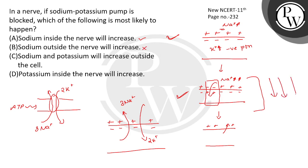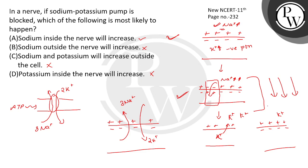What did we see? Sodium is moving from outside to inside. Both sodium and potassium movements are affected. Potassium inside the nerve will increase — this is also incorrect, because the potassium channel moves potassium out. Potassium inside the nerve will increase is wrong since potassium moved out. So, option A — sodium inside the nerve will increase — is correct. This information is from NCERT class 11, page 232.